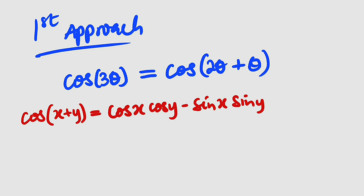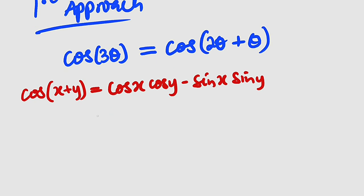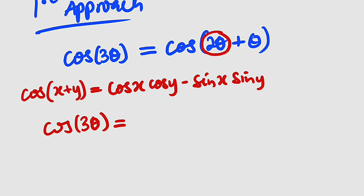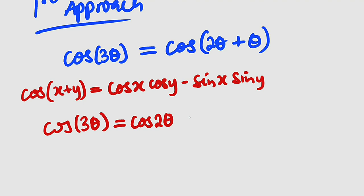So if you apply the same thing, where 2 theta is our x and theta is our y, it follows that cosine of 3 theta is the same thing as cosine of 2 theta multiplied by cosine of theta, then minus sine of 2 theta multiplied by sine of theta.